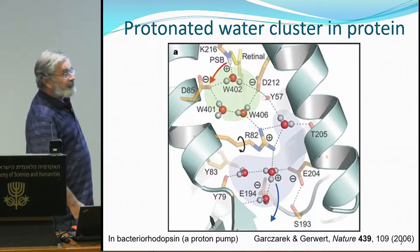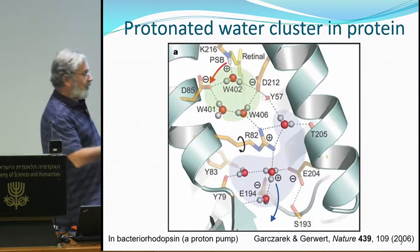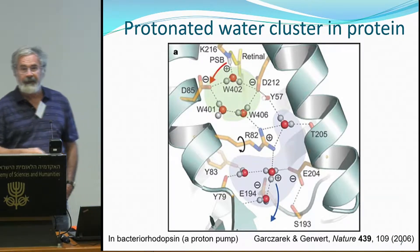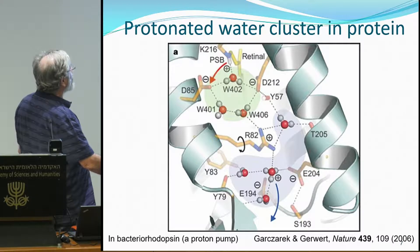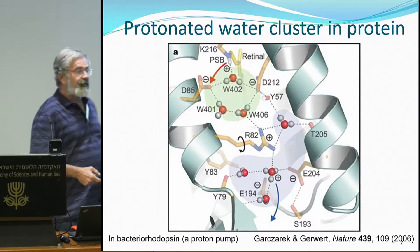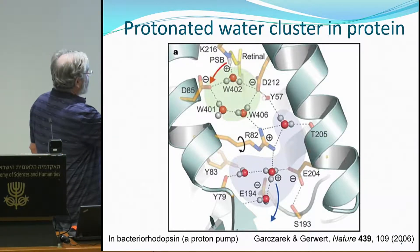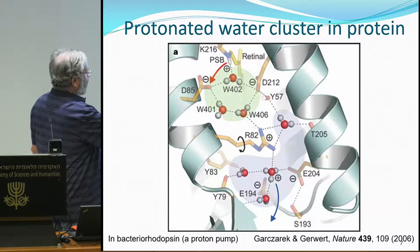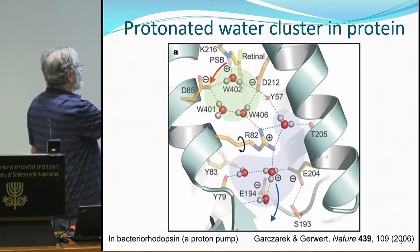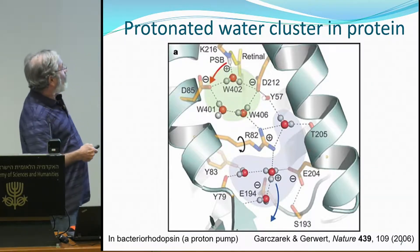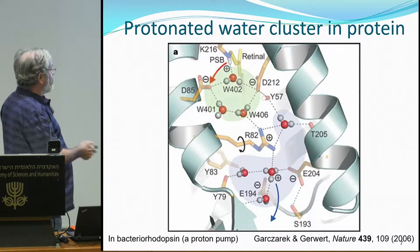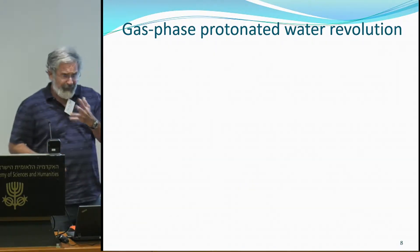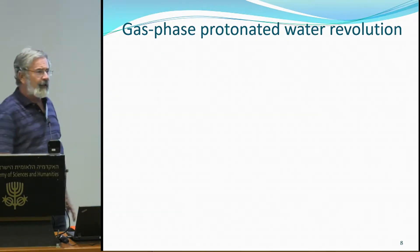In proteins too, protonated water plays an important role in dynamics. For example, bacterial rhodopsin transfers a proton from one side of the membrane to the other subsequent to absorption of a photon. There is a chromophore — a retinal — and you can see in the IR, from a Nature paper from the Gerwig group in Germany, the protonated water trimer, with the proton then moving to other positions. This says there is a lot of interest in understanding the fundamental physics and chemistry of protonated water.